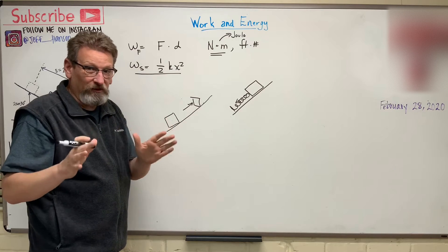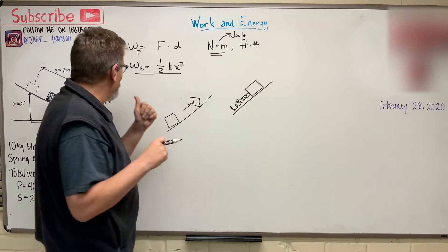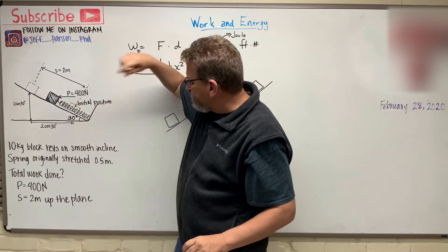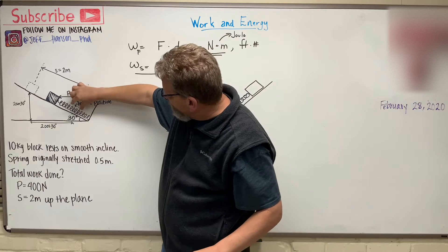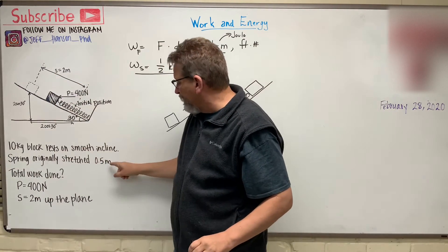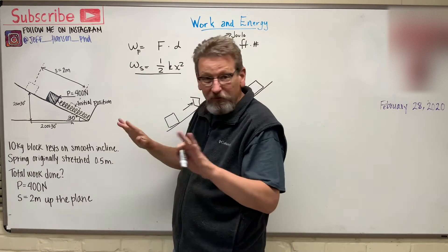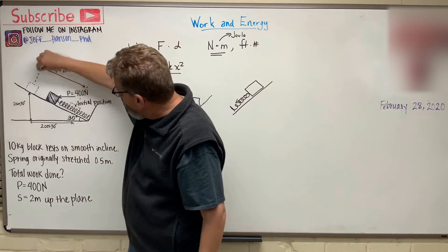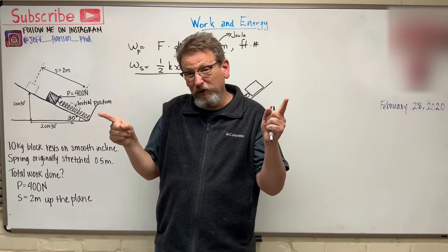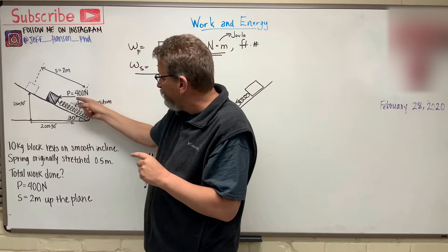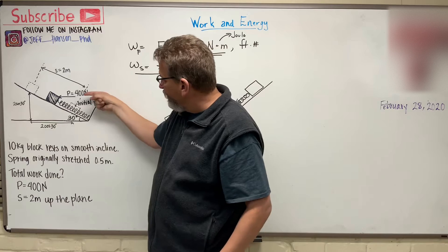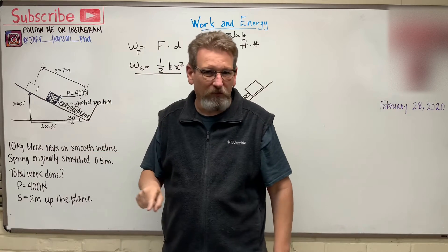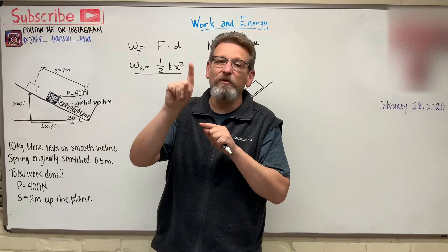So let's do a problem and see what kind of work is being done on a block. We have a block with a tension spring. The block started here, and somebody already stretched it to half a meter before we started the problem — the spring is pre-stretched 0.5 meters. Now we move it another two meters. The applied force is 400 newtons, applied horizontally even though it's on an incline, so we'll need to look at the components of the work — how much did it move in X and how much in Y.